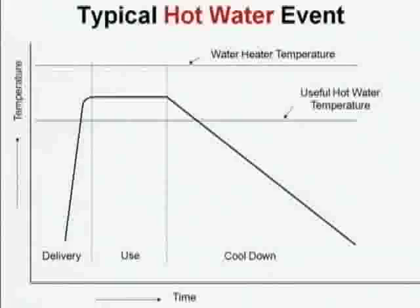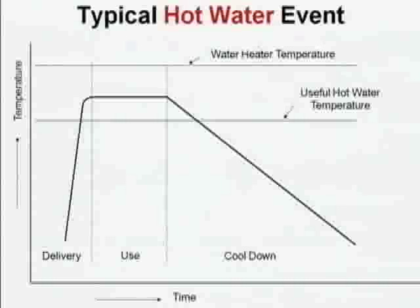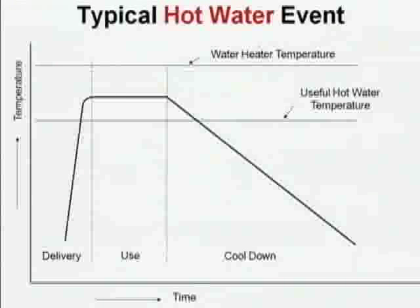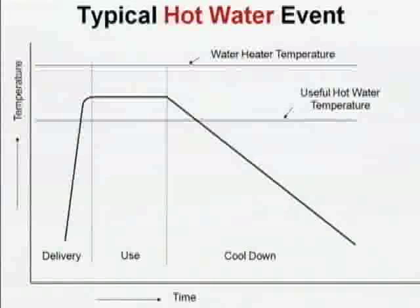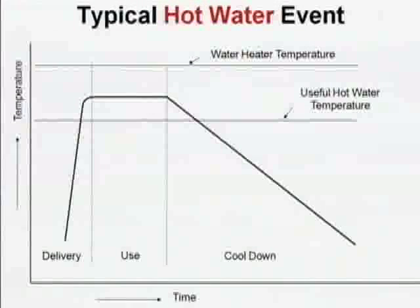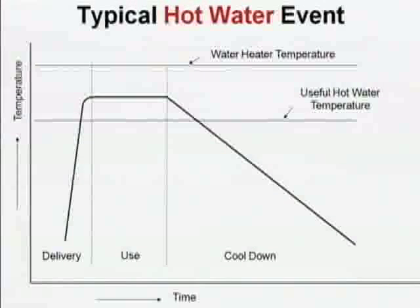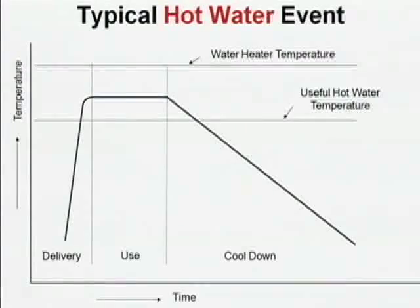When you turn off the tap, what happens to the temperature of the water in the pipe? It cools down — unless, of course, it's in your attic in the middle of summer in the afternoon. What temperature is your attic in the middle of summer in the afternoon? 120 degrees. It's not cooling down very fast; it might actually be warming up.